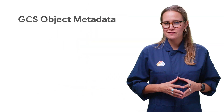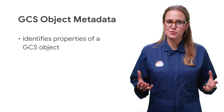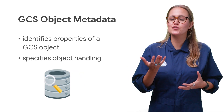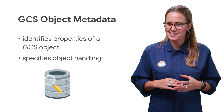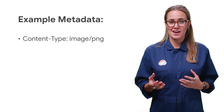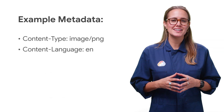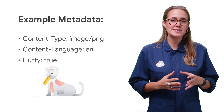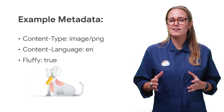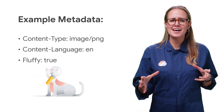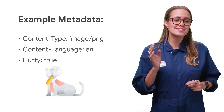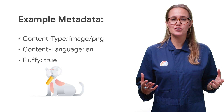Metadata identifies properties of a Cloud Storage object and specifies how the object should be handled when it's accessed. Metadata exists as key-value pairs. The mutability of metadata varies — some metadata you can edit at any time, some metadata you can only set at the time the object is created, and some metadata you can only view.